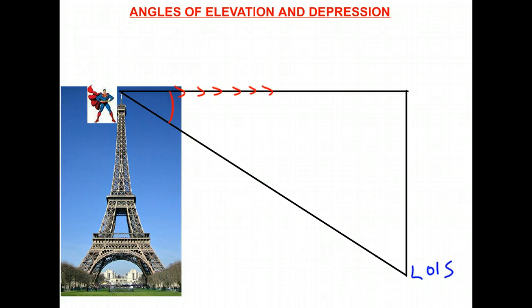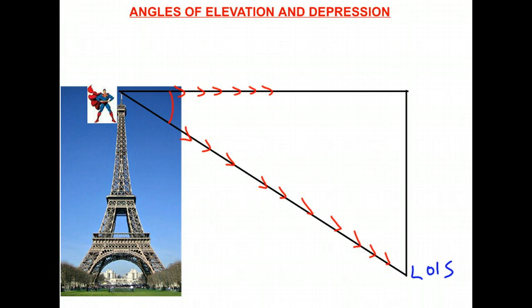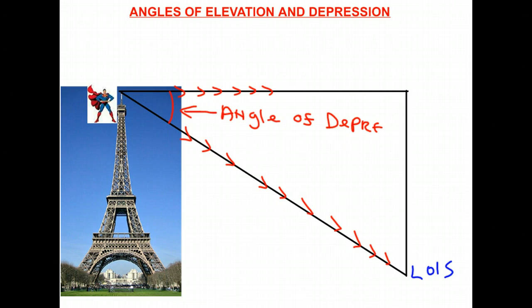Notice that in this case, by looking down, the angle is formed below the horizontal line. His line of sight goes right to Lois, and so this angle is called the angle of depression. It's the angle formed between the line of sight and the horizontal line from Superman's eye, but below the horizontal line.